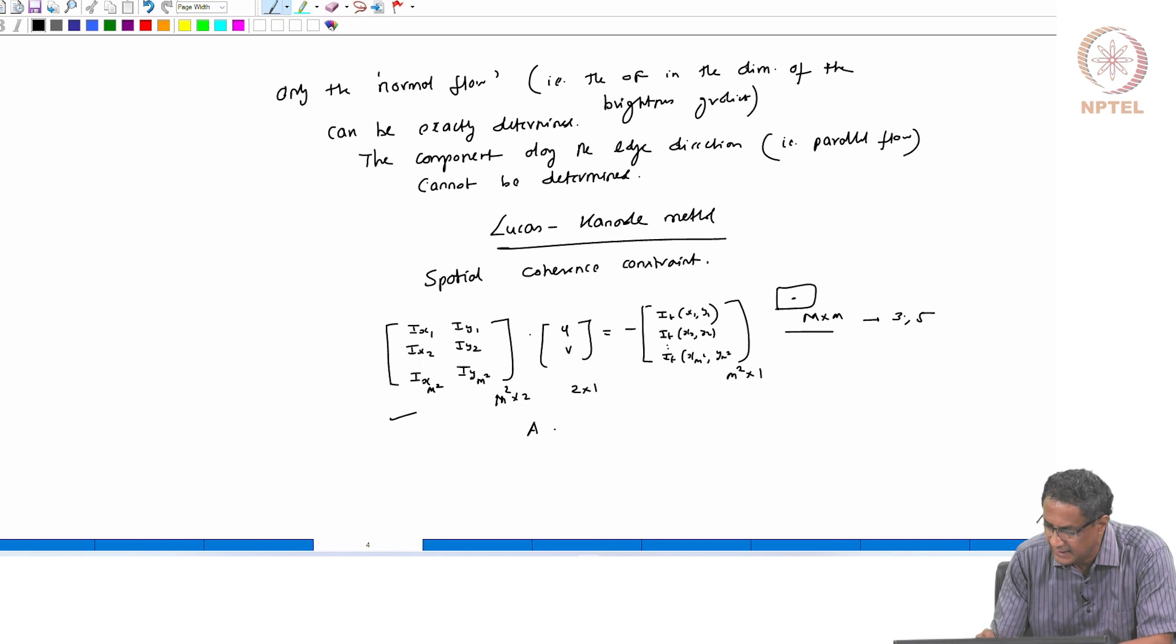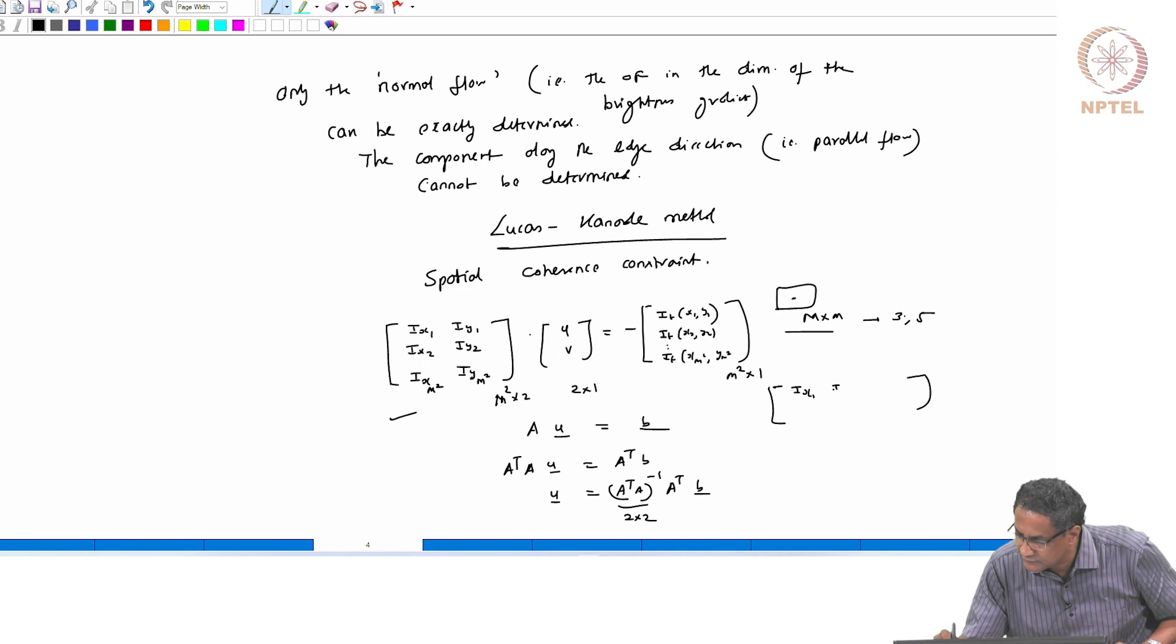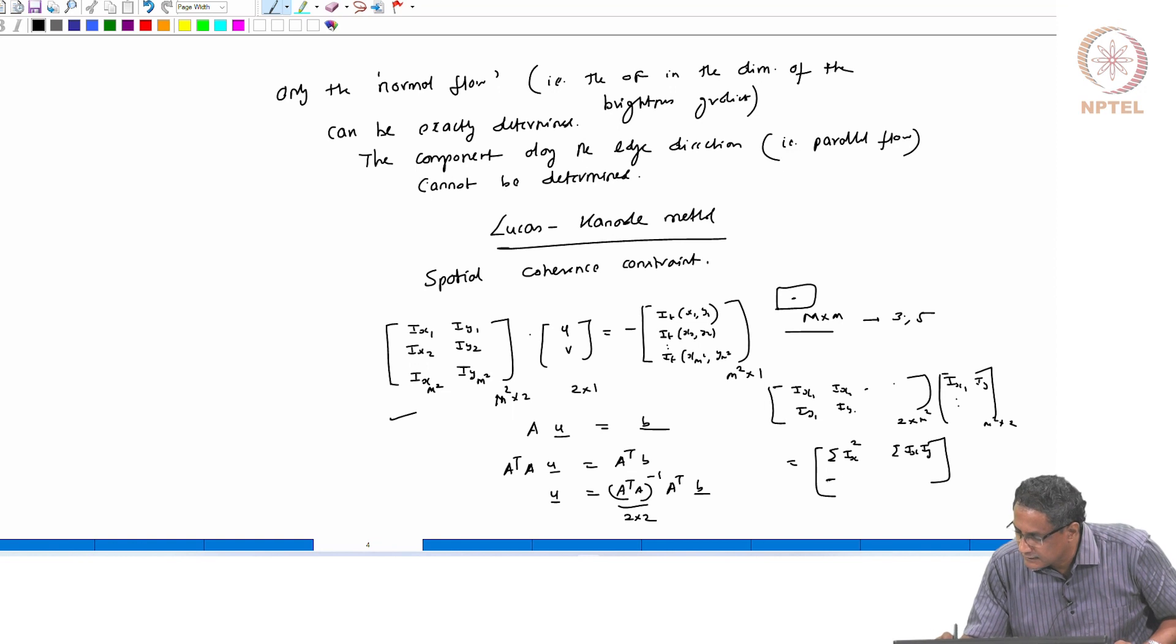So let's call this as A u vector is equal to b, and now we know how to do that. So you can do A transpose A u is equal to A transpose b or in other words, you can do u is equal to A transpose A the whole inverse A transpose b, and A transpose A is clearly a 2 cross 2 matrix. This is just a 2 cross 2 matrix, but if you think about what A transpose A is, what is a transpose? A transpose is this i_x1 whatever i_x2 blah blah blah then i_y1 i_y2 blah blah blah and then this guy, same thing ordered this way i_x1 i_y1. So if you do this, this is like 2 by m square like m square by 2. So you get actually 2 cross 2 matrix whose entries are simply gradient square along x then i_x i_y, then whatever i_y i_x which is same as i_x i_y and summation i_y square.